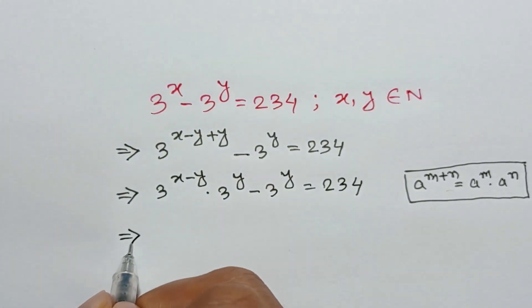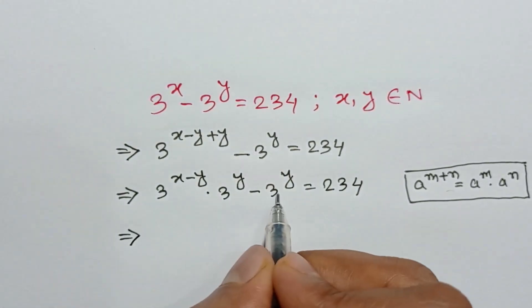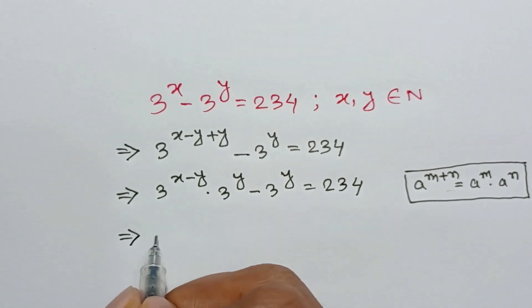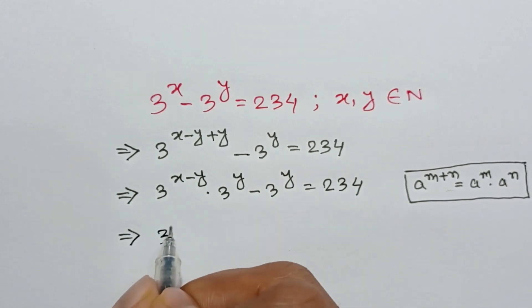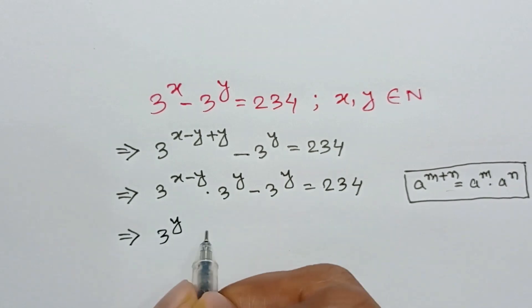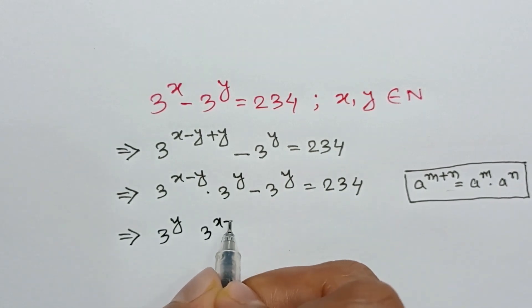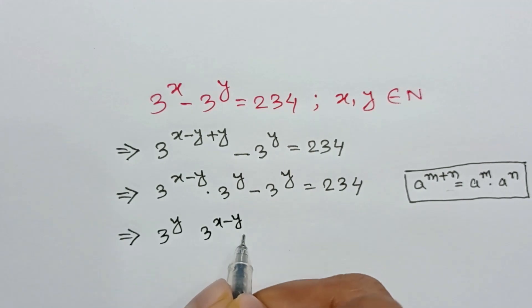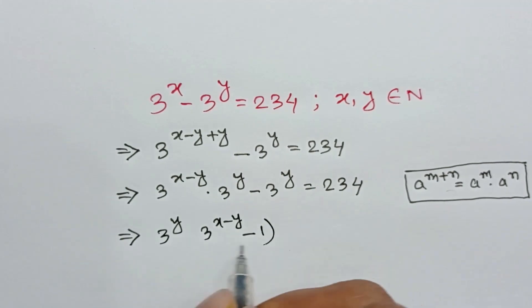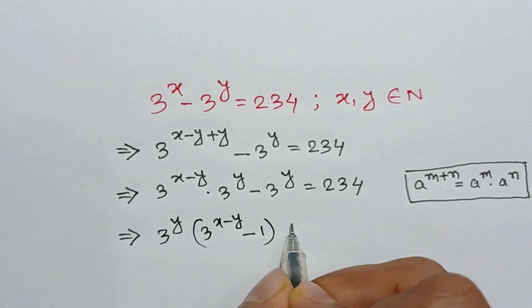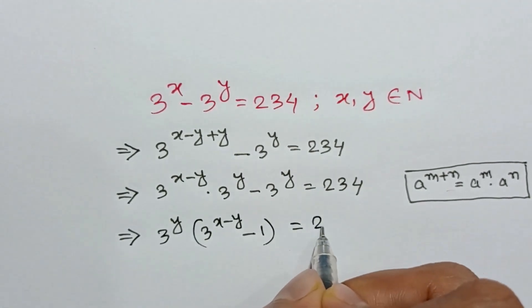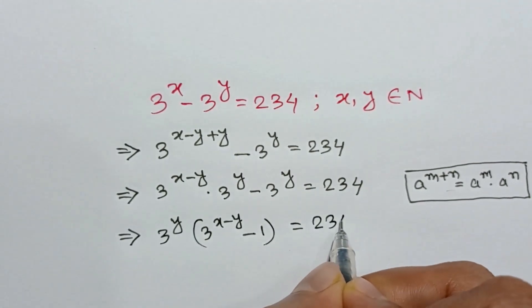3 to the power y is common, so taking out 3 to the power y, we get 3 to the power y times (3 to the power x minus y minus 1) is equal to 234.